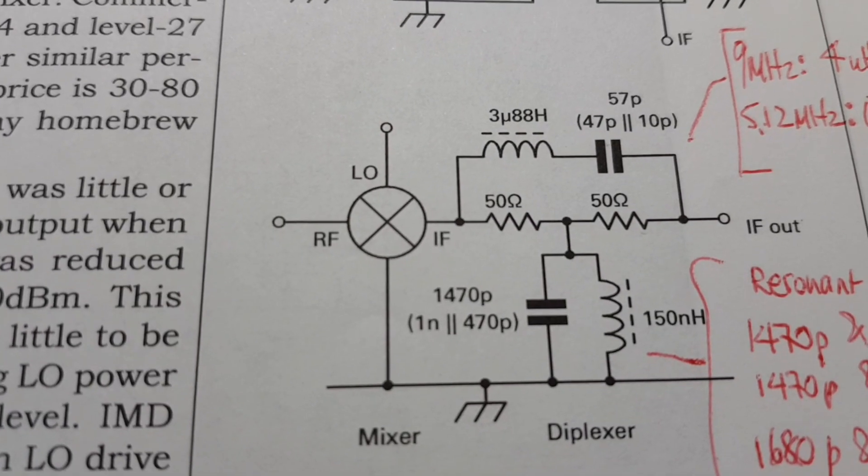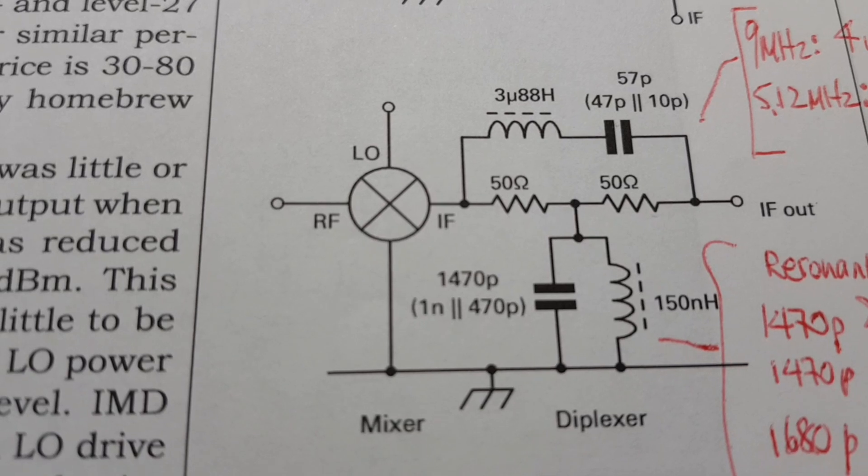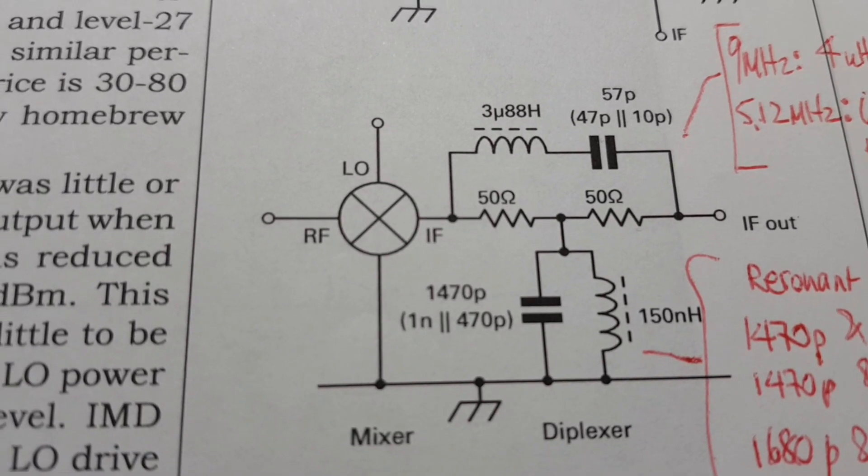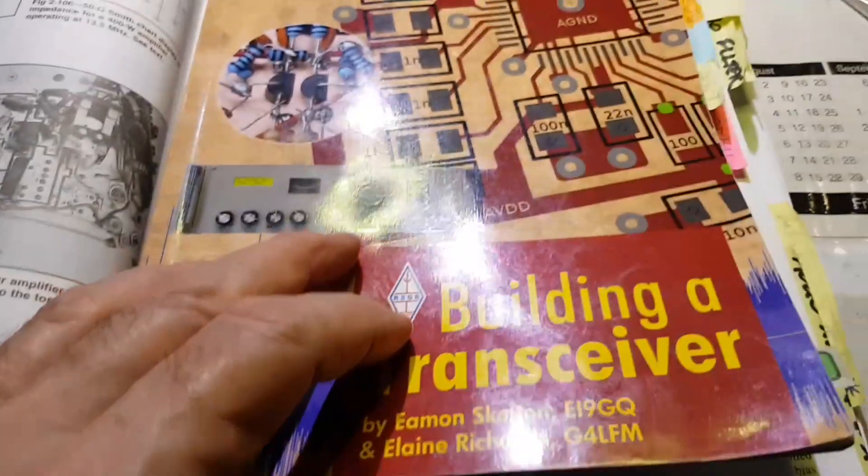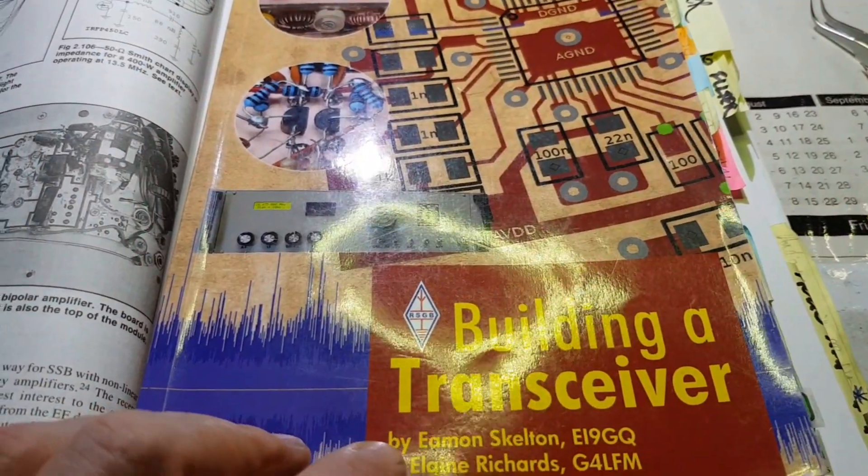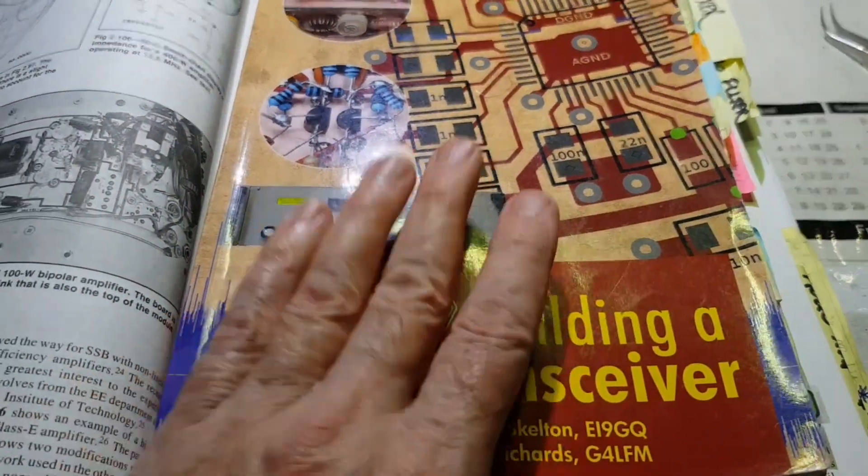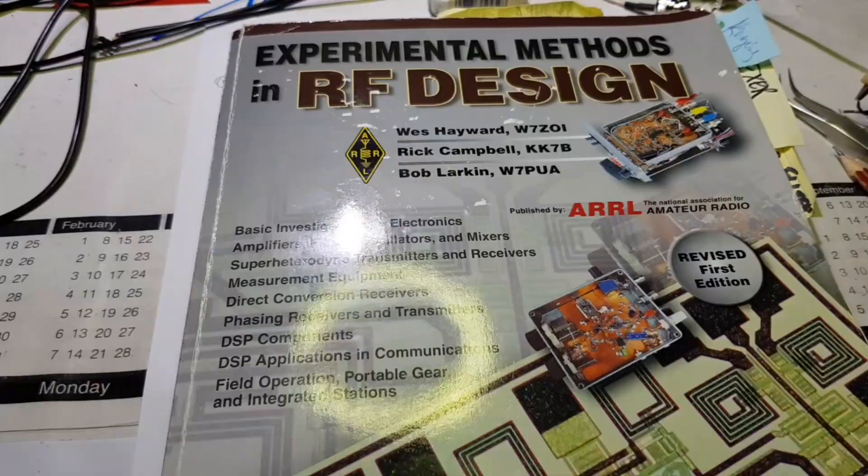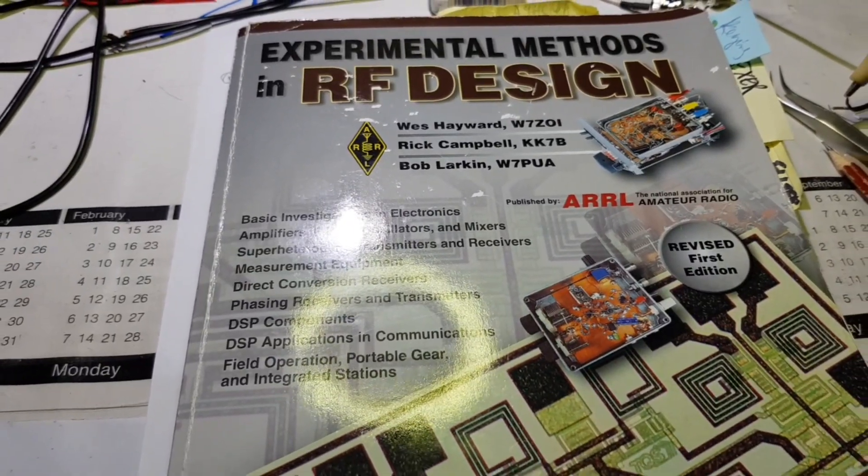Here's the bridged-T diplexer again, exactly the same circuit in EI9GQ's book, in Experimental Methods in RF Design.